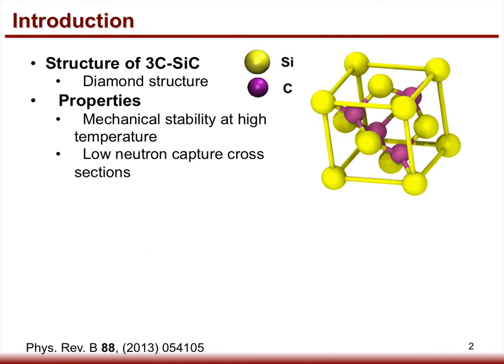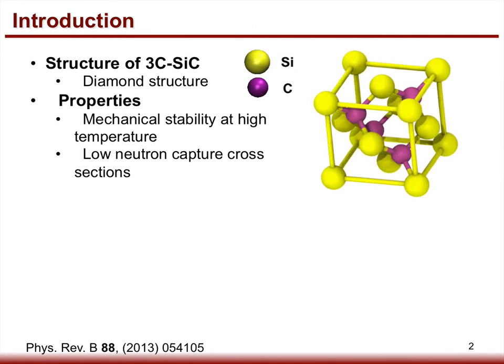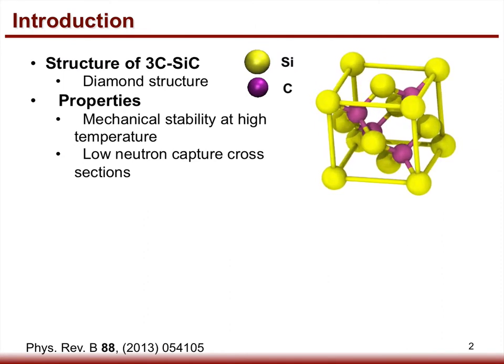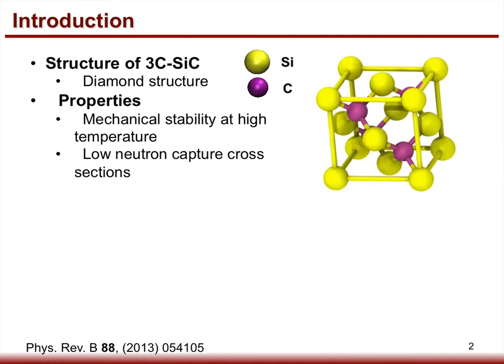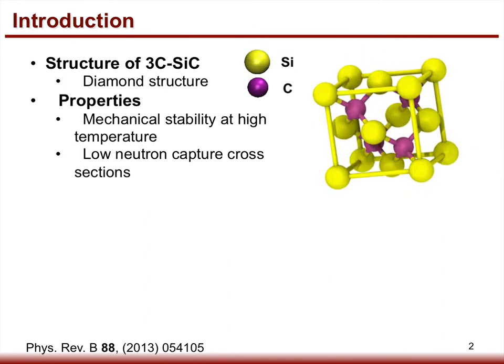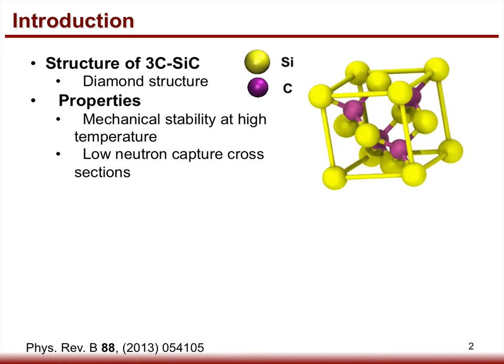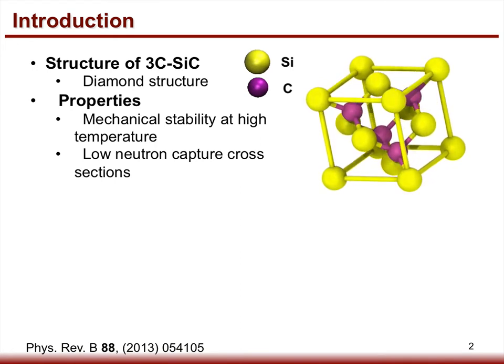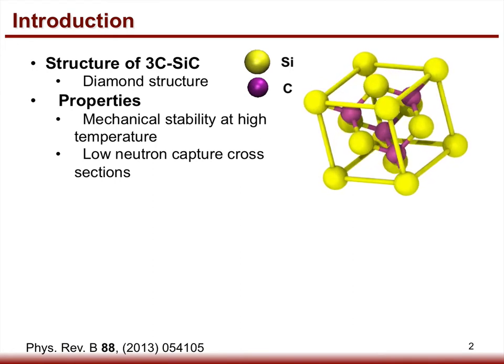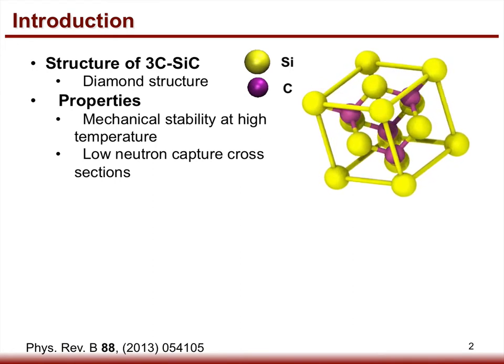The crystal structure of 3C Silicon Carbide is the diamond structure. We use yellow for silicon atoms and purple for carbon atoms.